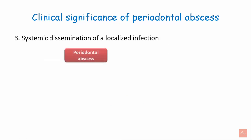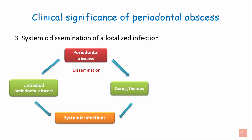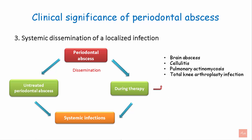Periodontal abscesses can disseminate systemically in untreated cases or during therapy, leading to systemic infections such as brain abscess, cellulitis, pulmonary actinomycosis, and total knee arthroplasty infection. This can be prevented by needle aspiration of the abscess contents.